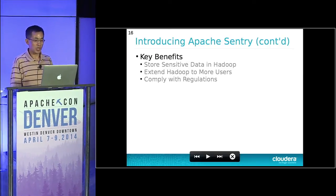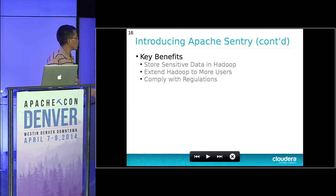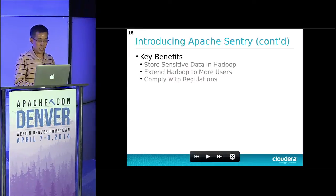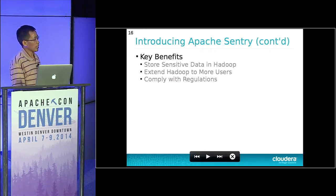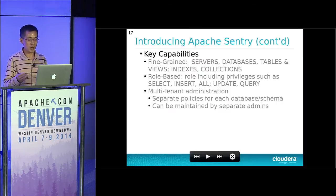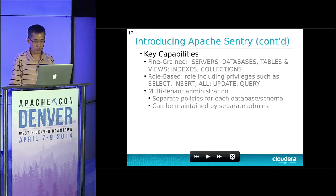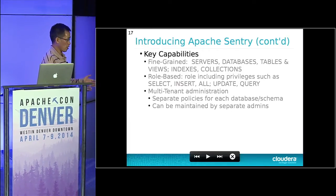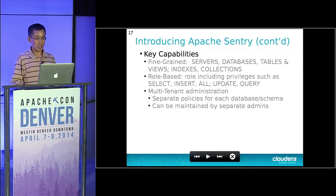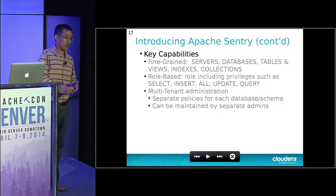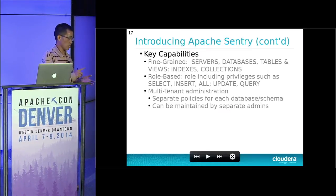The benefits of using Apache Sentry: it allows you to store sensitive data in Hadoop with access control, extend your data to more users, and helps you comply with regulations and governance. The main capabilities you gain from Sentry — first of all, it's fine-grained. Sharing a file is not fine-grained; it's either share the whole file or nothing. But most of the time we want more detailed control, such as in SQL — controlling at the server, DB, table, view level, or even columns or row level.